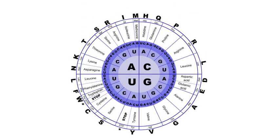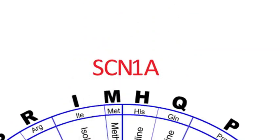Dravet syndrome is a catastrophic form of pediatric epilepsy that causes intractable seizures in infants. Genetic studies have shown a strong association between the disorder and mutations of a gene called SCN1A.